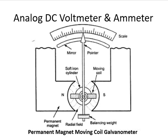Today we start with the permanent magnet moving coil galvanometer. The topic is analog DC voltmeter and analog DC ammeter. But before starting the voltmeter and ammeter, we have to deal with the permanent magnet moving coil galvanometer, because the basic arrangement of voltmeter and ammeter is dealt with the help of this galvanometer.